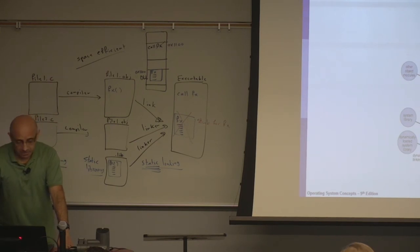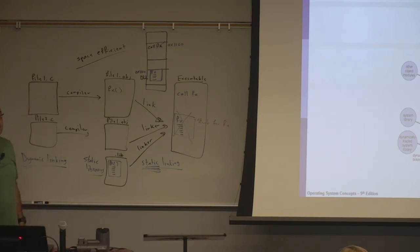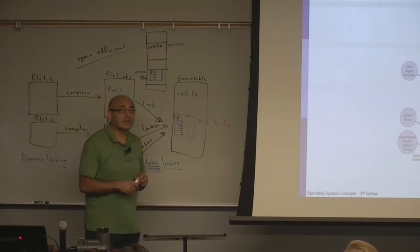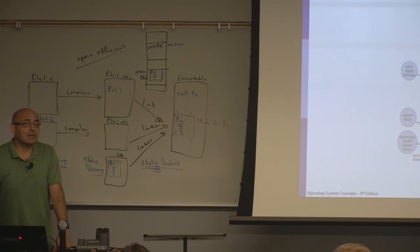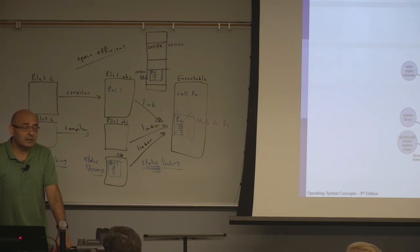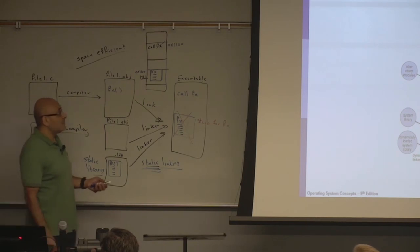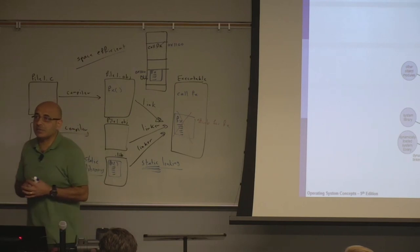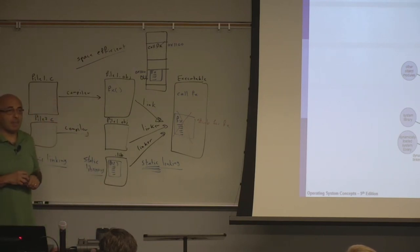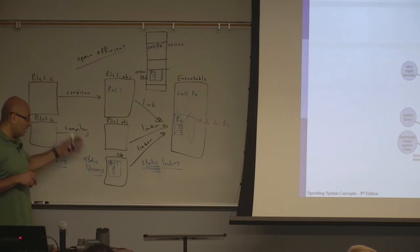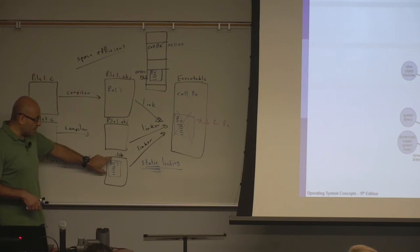On some systems they use the term shared library or shared object. On different systems or different platforms there would be different versions of the DLL. When you do static linking for a specific system, you get a version of the library that belongs to the system you are compiling for. You have the extension DLL for dynamic link library and the extension SO for a shared object — you see DLL on Windows systems and SO on Unix systems.